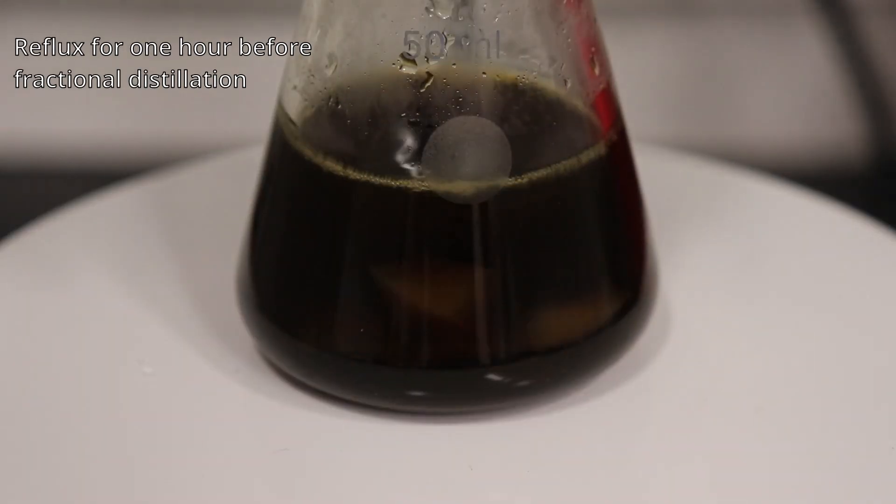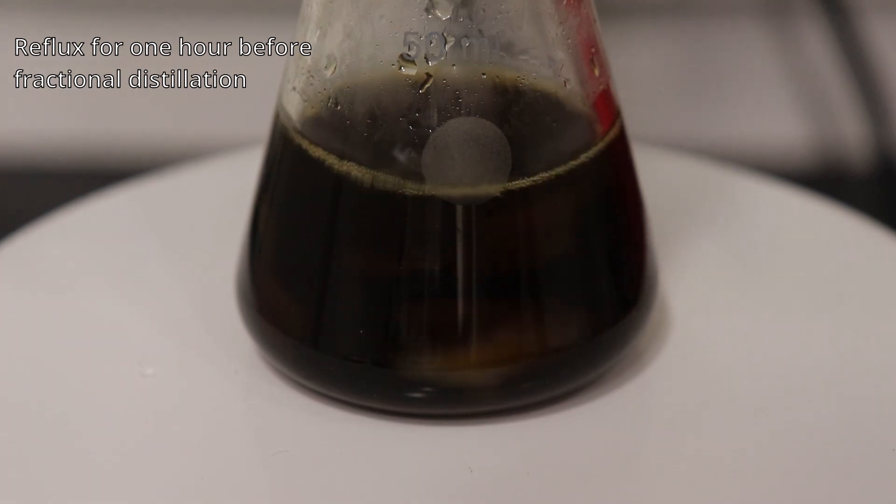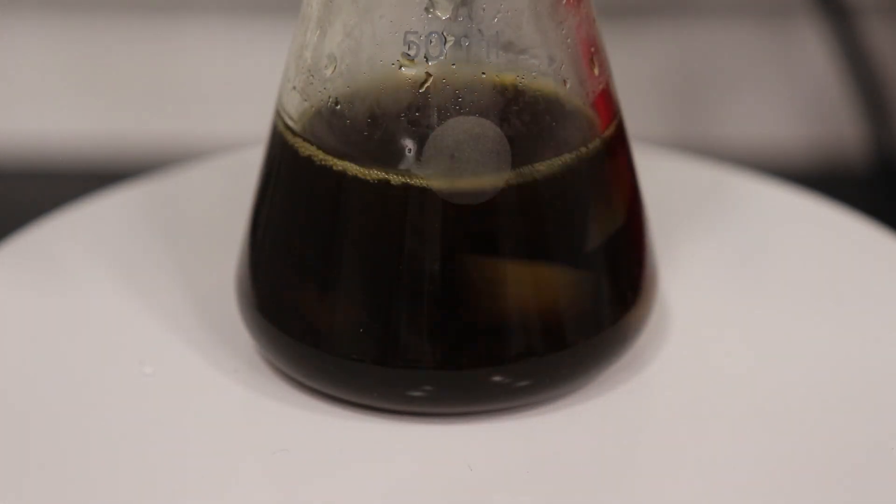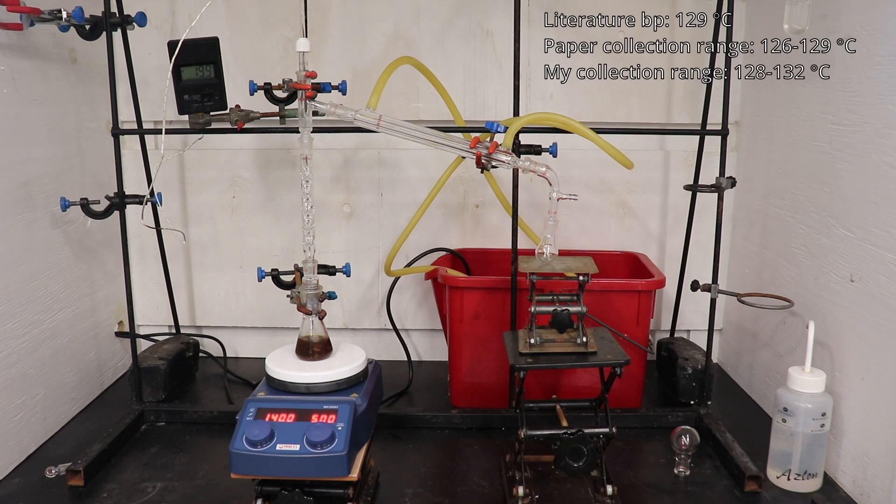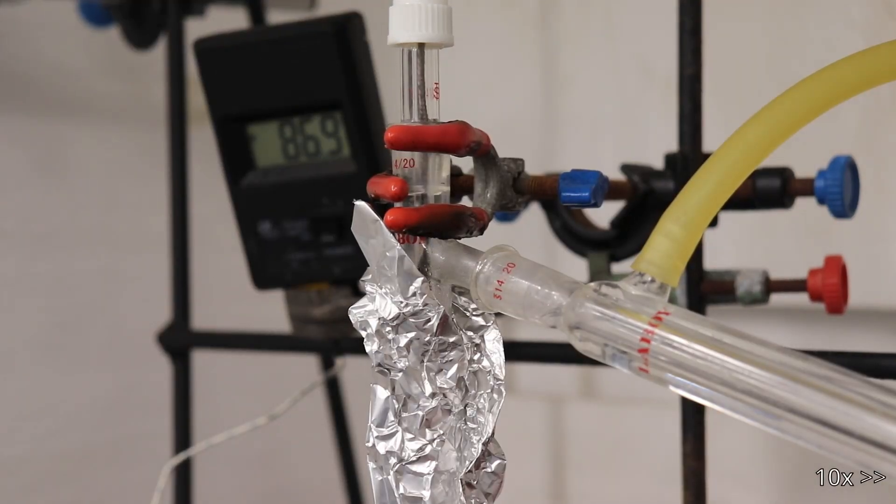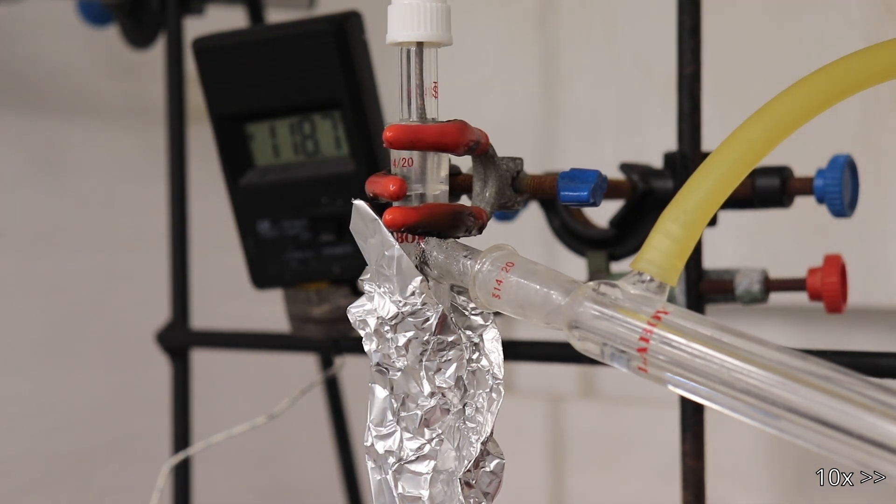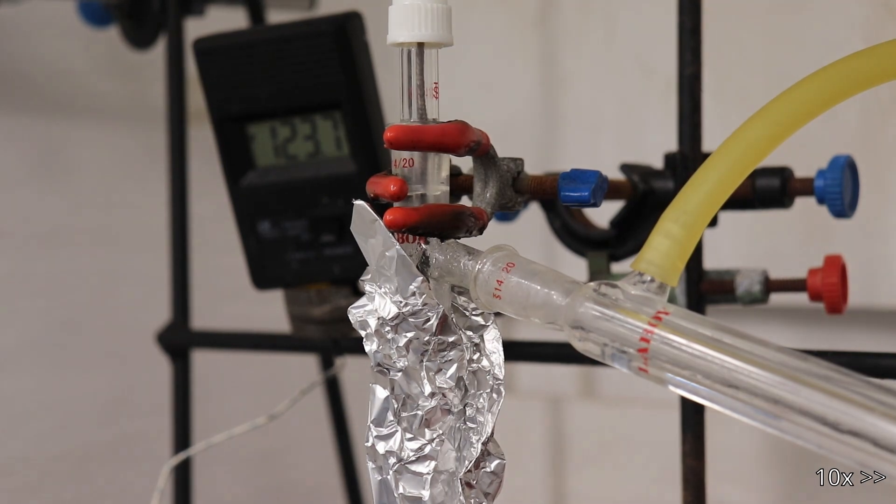The apparatus is then reconfigured for fractional distillation. The theoretical boiling point of morpholine is 129 degrees Celsius, and the paper I'm following collects the product in a range of 126 to 129 degrees Celsius. However, I found that the product distills over at a temperature range of 128 to 132 degrees Celsius. The recovered distillate had a mass of 20 grams, which represents a 39% yield from diethanolamine.